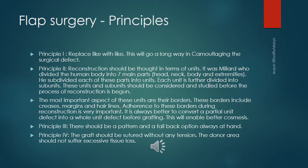The basic tenet of flap surgery is to replace like with like. The reconstruction plan should follow Millard's concept of units. These units and subunits should be carefully studied before any flap procedure. There are seven major units in the human body: head, neck, body, and extremities.